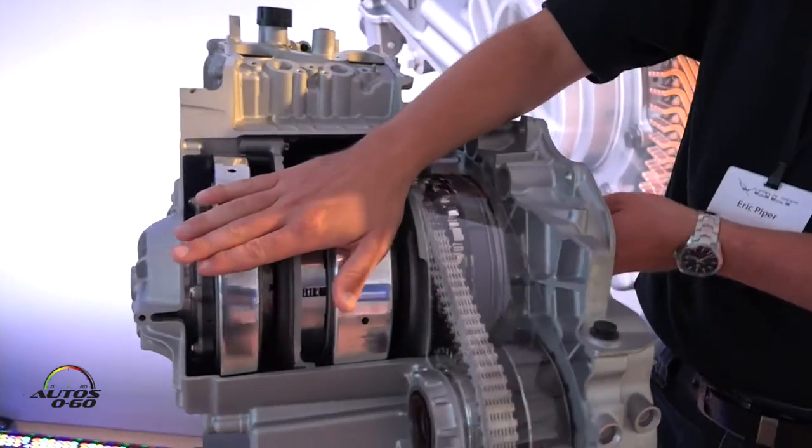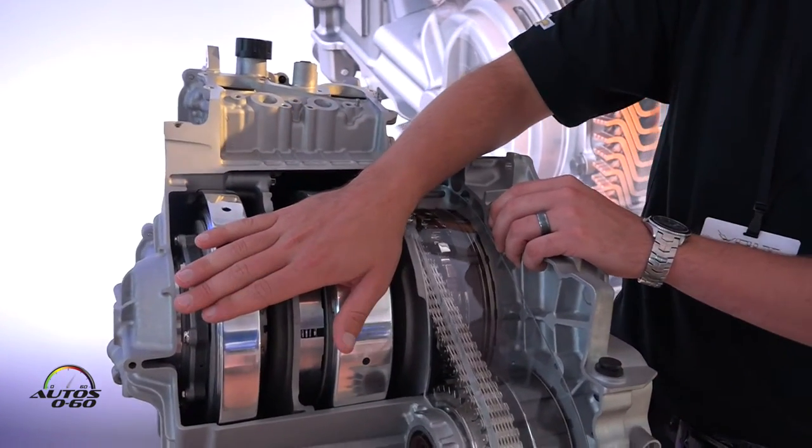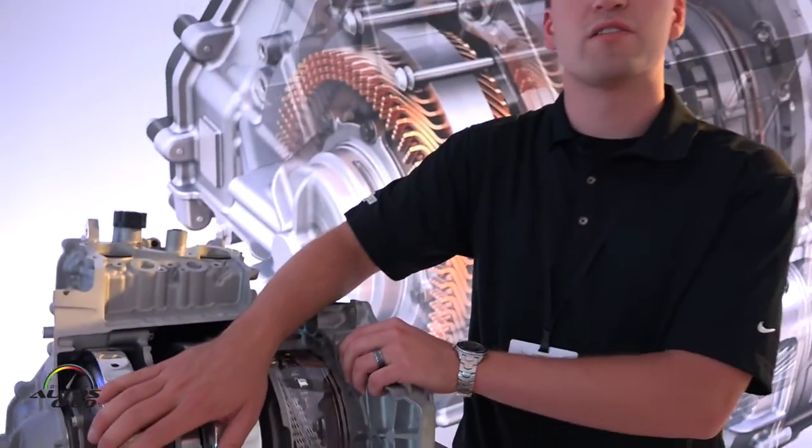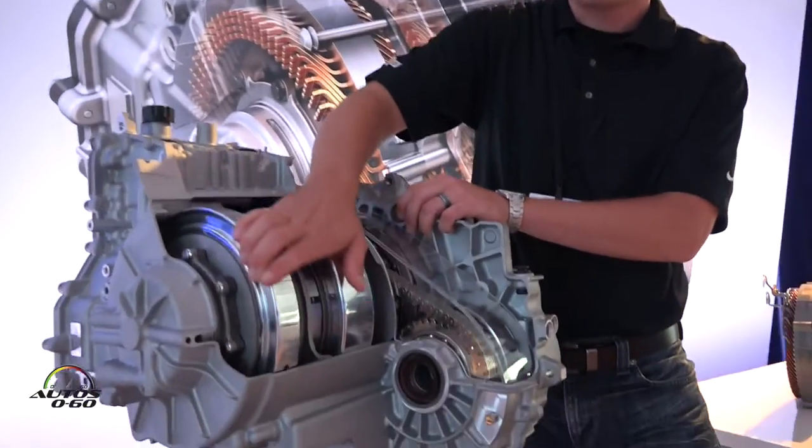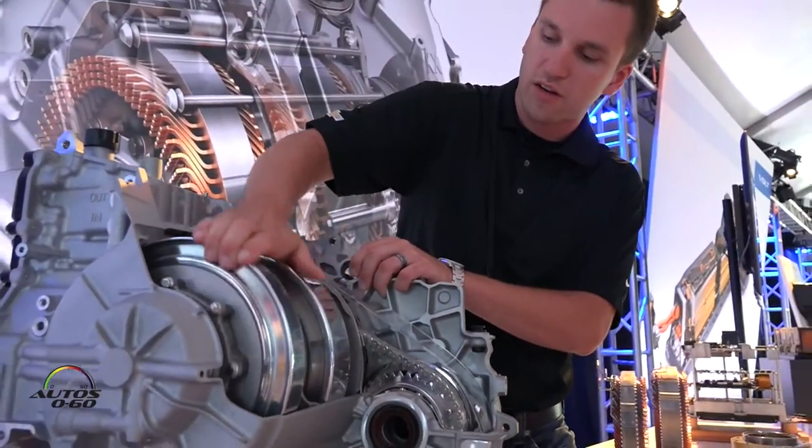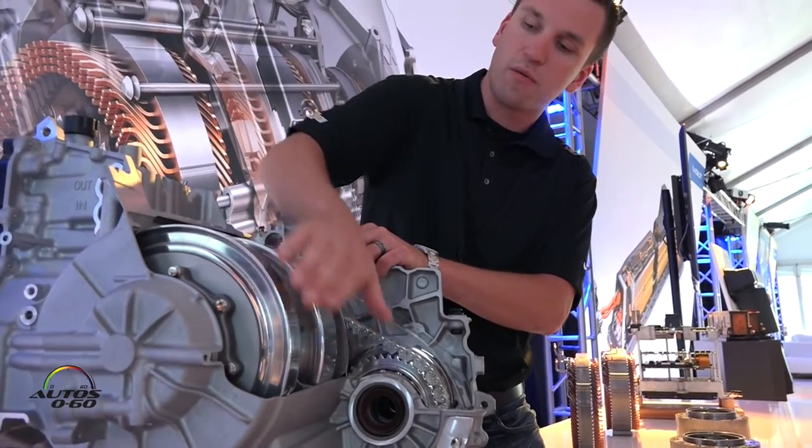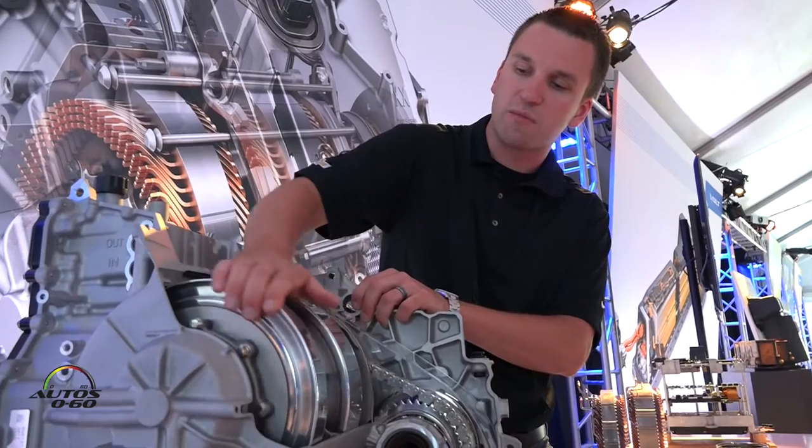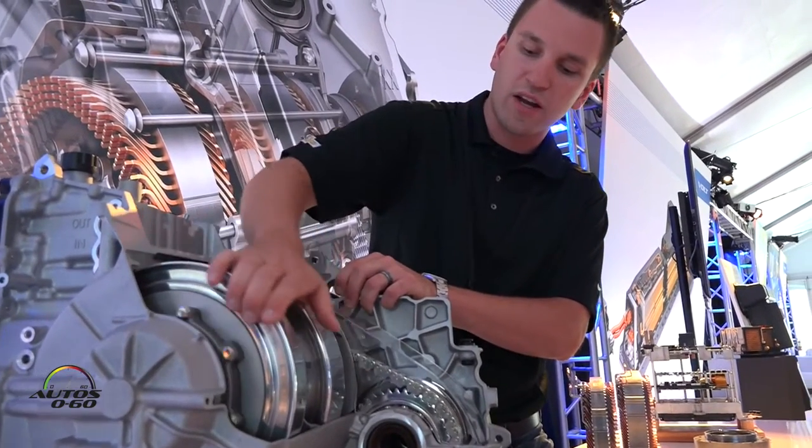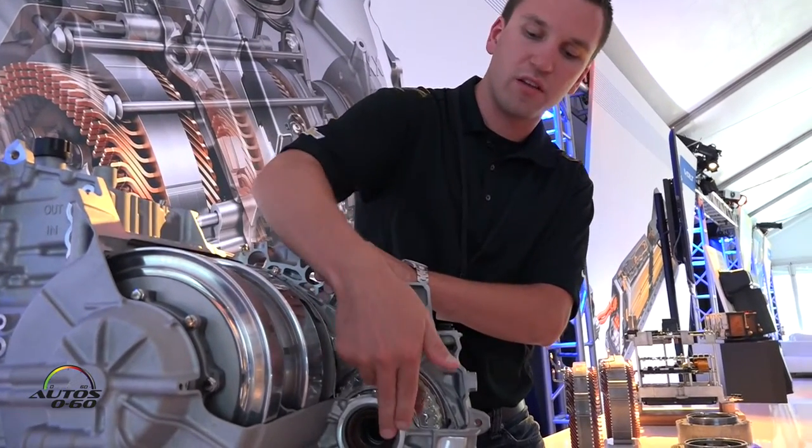So for the Gen 2, we can use both of the electric motors to drive the vehicle in our electric mode. Both of them will work together in unison and push the vehicle along. They work together at roughly the same speed and drive the output, which is through this chain, to the axles.